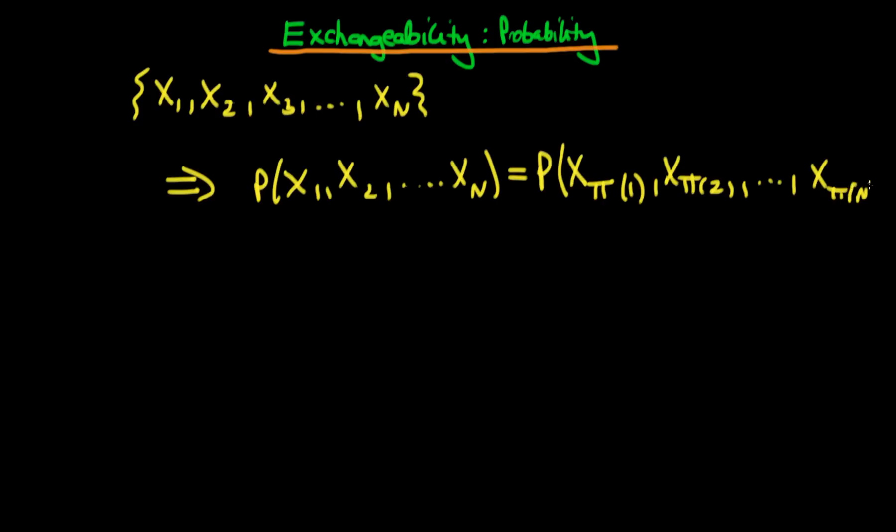And the idea here is that pi represents any permutation of the indices, so it could be 1, 2, 3, all the way through to the nth one. So that might be one particular sequence, but it also might be, for example, if I start with 2 and then I have n minus 1, etc. So any permutation of the indices is what pi represents here.